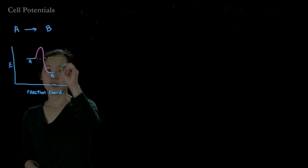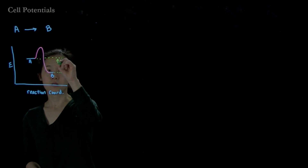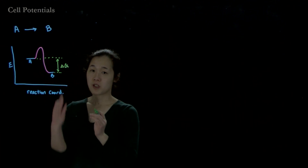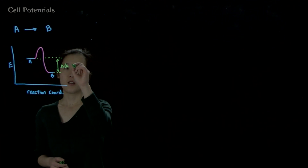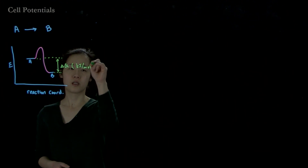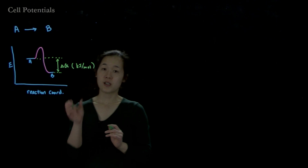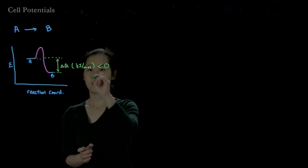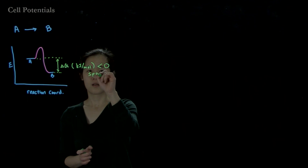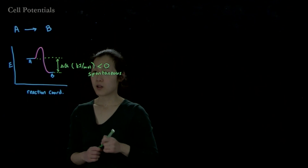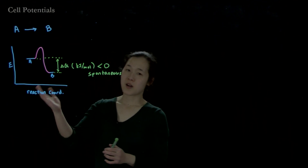If we compare the overall free energy — this is our delta G, which is usually in units of kilojoules per mole — if delta G is less than zero, this reaction is spontaneous. We sometimes call this thermodynamically downhill.